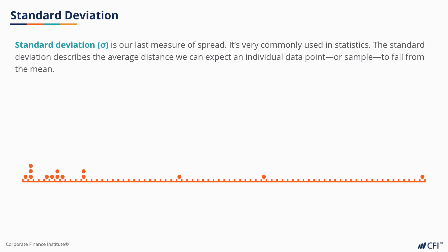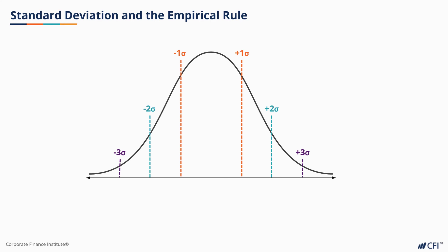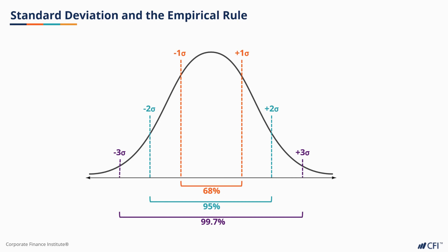Standard deviation is our last measure of spread and it's very commonly used in statistics. The standard deviation describes the average distance we expect an individual data point or sample to fall from the mean. It is often abbreviated as SD, or the Greek letter sigma. When our data is normally distributed, standard deviation easily helps us understand the likelihood of data falling inside or outside a specific range. This is because 68% of data falls within one standard deviation, 95% within two standard deviations, and 99.7% within three standard deviations. This is known as the 68-95-99.7 rule, or the empirical rule.